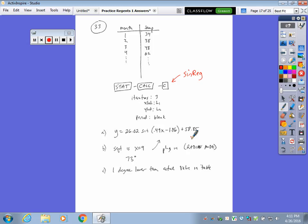And then how far is this from the actual value? Well, we got 73 degrees on the chart, it actually said 74 degrees. So you're one degree lower.